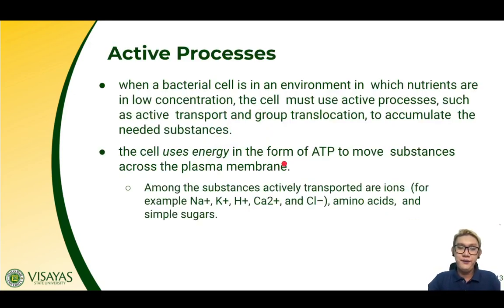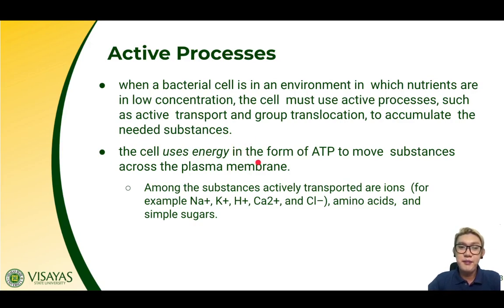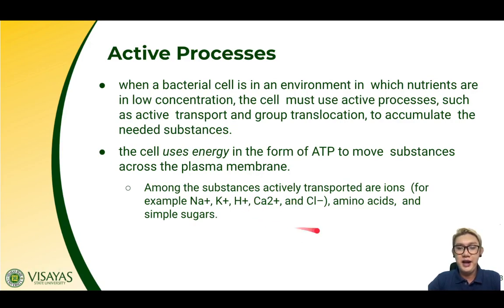When there is already expenditure of energy, that is called an active process. When a bacterial cell is in an environment where nutrients are in low concentration, the cell must use active processes such as active transport and group translocation to accumulate needed substances. The cell uses energy in the form of ATP to move substances across the plasma membrane. Among the substances actively transported are ions — for example, sodium, potassium, protons, calcium, fluoride — as well as amino acids and simple sugars.